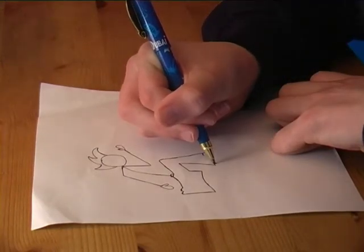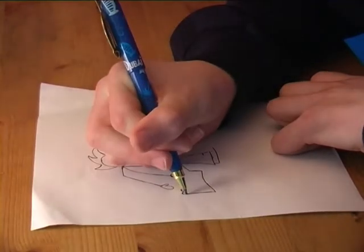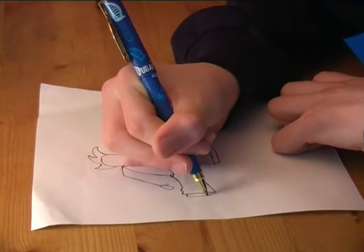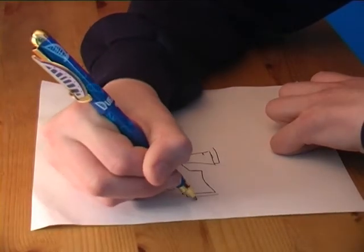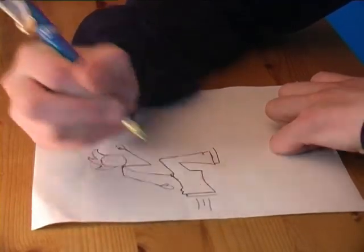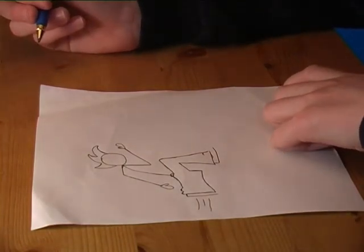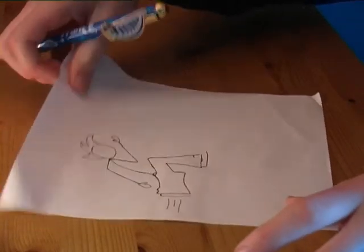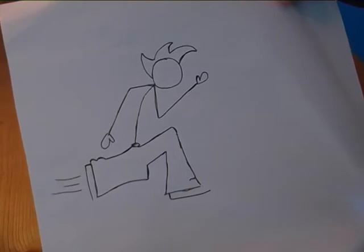Last bit here is his feet. There you go. To make it look more real add some speed lines. There you go. It's done. Fancy pants in running position.